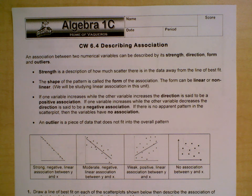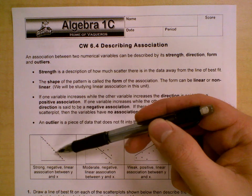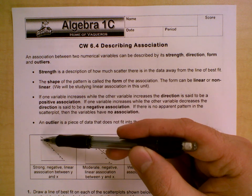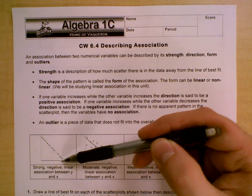Next thing, if one variable increases while the other variable increases, the direction is said to be a positive association. If one variable increases while the other variable decreases, the direction is said to be a negative association. If there is no apparent pattern in the scatter plot, then the variables have no association. So we can see that this has a negative association because as this is going down, this is getting bigger.